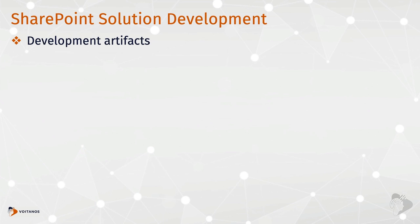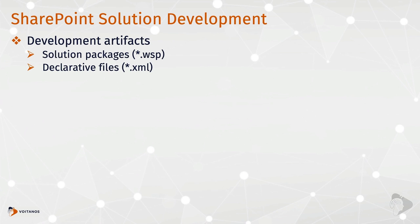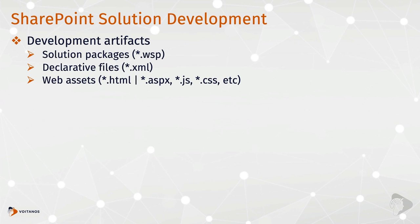Farm solutions involved building a solution package — a Microsoft cabinet file with a WSP extension. This file always contained declarative XML files with features and element manifest files. Most of the time, farm solutions also included web assets like HTML, ASPX pages, JavaScript files, CSS files, and images. They also typically included compiled .NET assemblies — DLL files — implementing features or event receivers, web parts, timer jobs, and more.